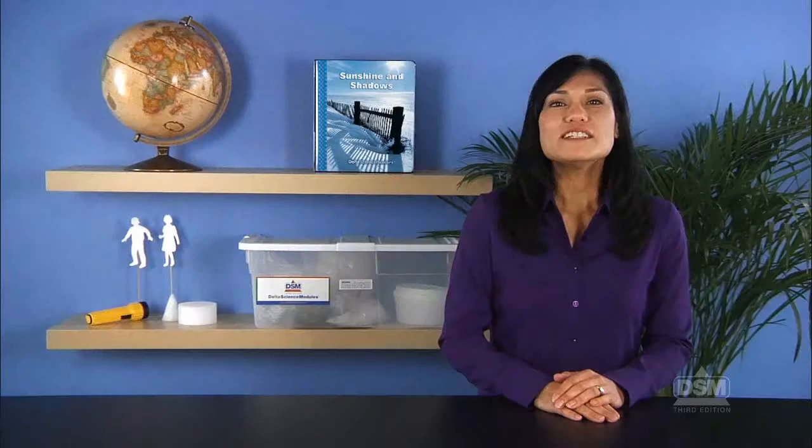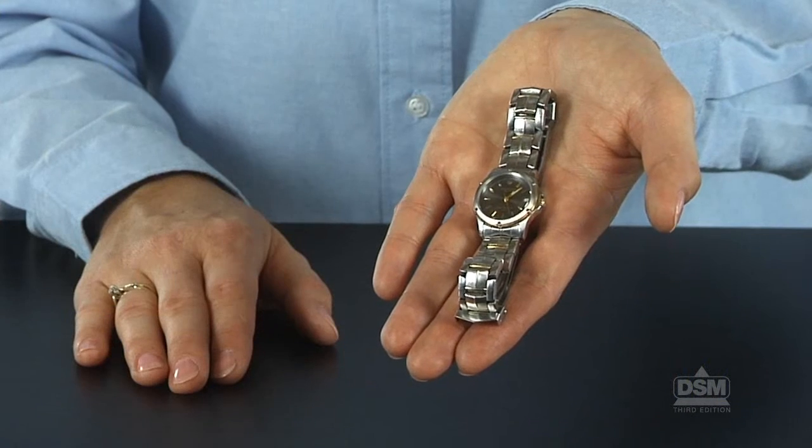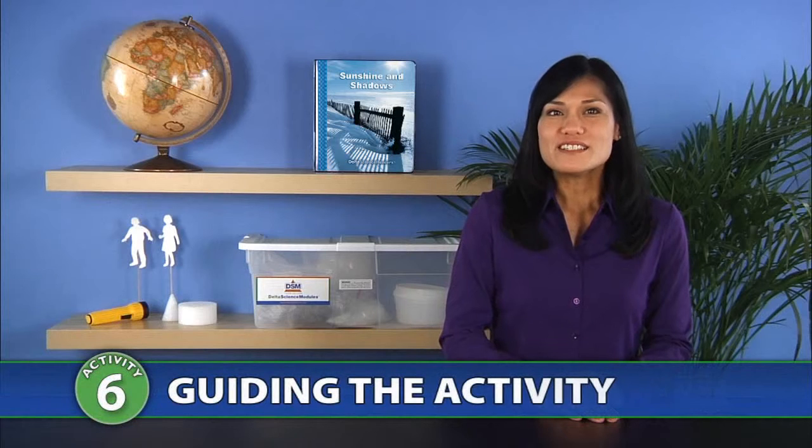To prepare for Session 3, each team of 4 will need their sundial. Plan to do Session 3 when the sun will be shining all day. Make sure to take a watch outside with you if any of the students in the class have made their sundials based on the time. To begin Session 3, have the students reposition their sundials in the same place, early on the next sunny day after they complete their sundials.